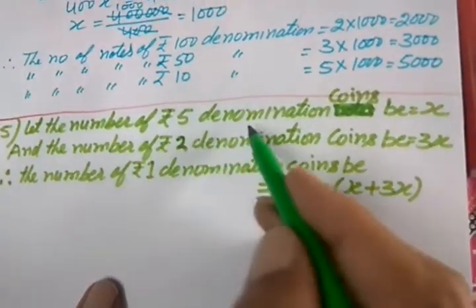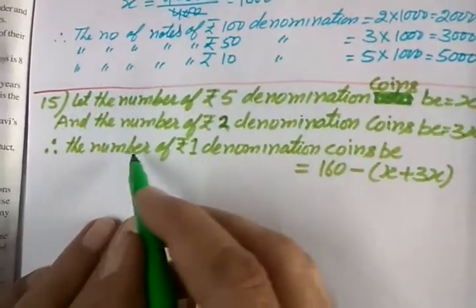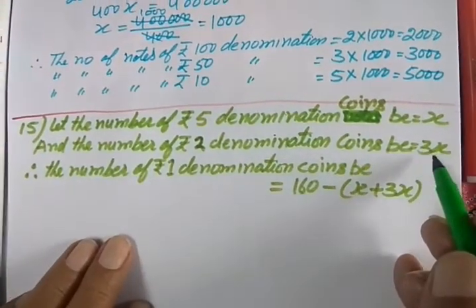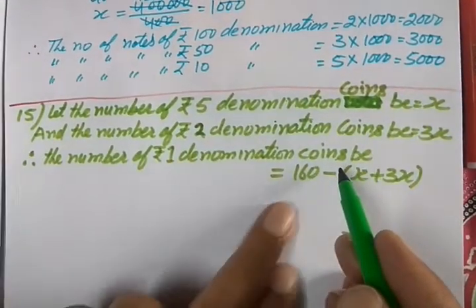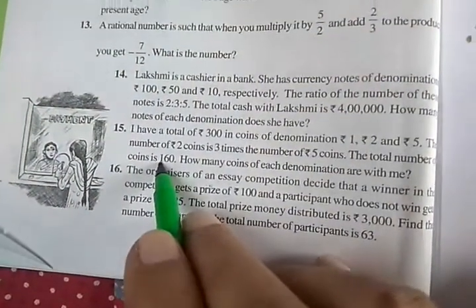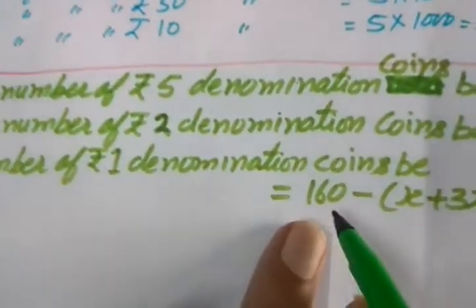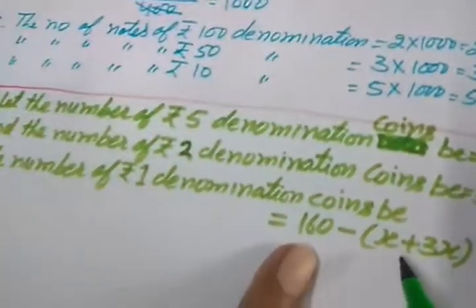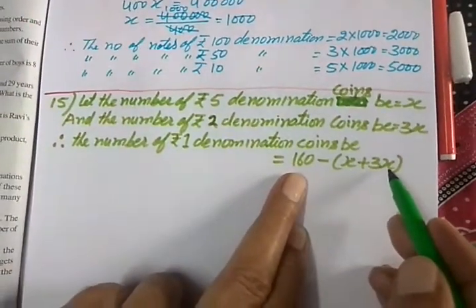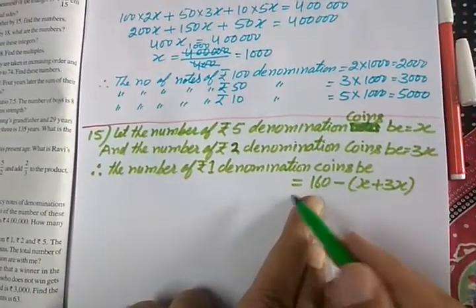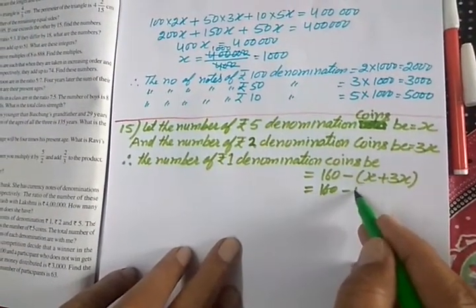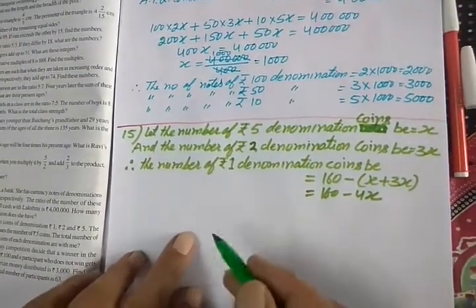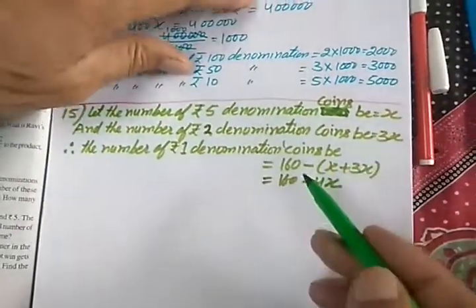Let the number of ₹5 denomination coins be x, and the number of ₹2 denomination coins will be 3x because it is 3 times. For the number of ₹1 denomination coins, we have already been told that the total number of coins is 160. If you subtract the number of ₹5 coins and the number of ₹2 coins from 160, you get the remaining as the ₹1 coins. So the number of ₹1 coins is 160 minus 4x.